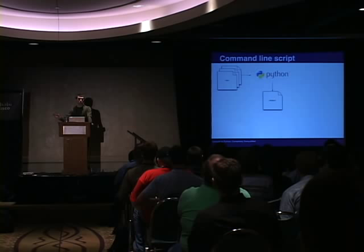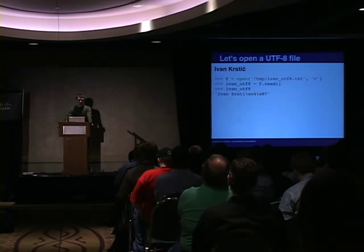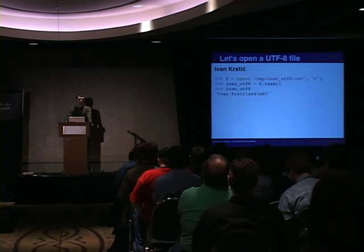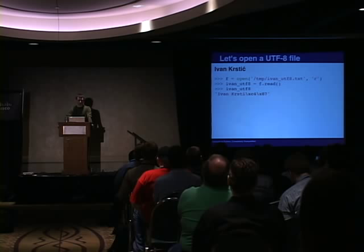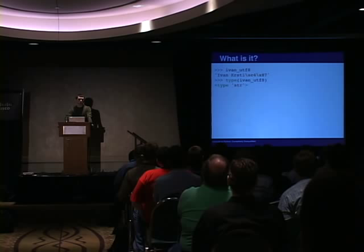Imagine you open your favorite desktop text editor, create a new file, and enter a name. You save that file in UTF-8 format — most editors will let you choose that. Now in Python, you open that file, read the content into a variable, and what do you get? What is this object? You can see that its type is str. It's just a string of bytes.